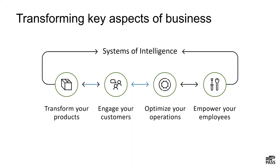Empowering employees is the fourth area. We see applications every day in Office 365 — for example, what Clutter does to your email, using machine learning to determine which emails you don't need to see. Interestingly, the $1.6 trillion study showed that optimizing operations and empowering employees are actually huge potential uses of analytics — even bigger than engaging customers in CRM applications.